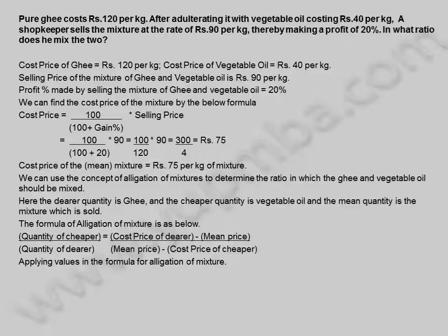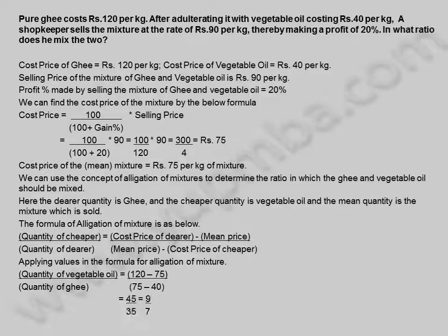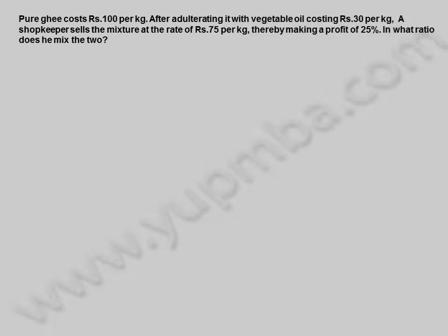Applying values: quantity of vegetable oil / quantity of ghee = (120 − 75) / (75 − 40) = 45 / 35 = 9 / 7. The ratio of vegetable oil to ghee in the mixture is 9:7.